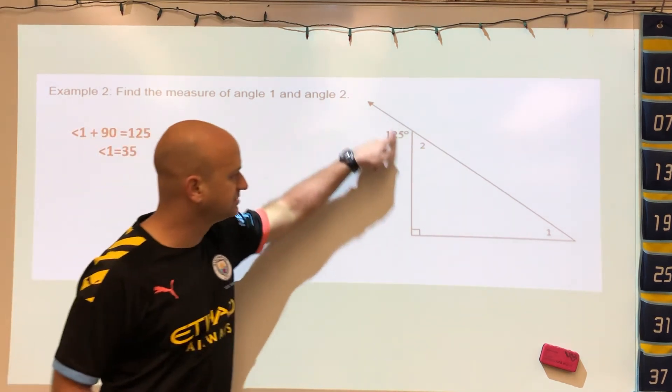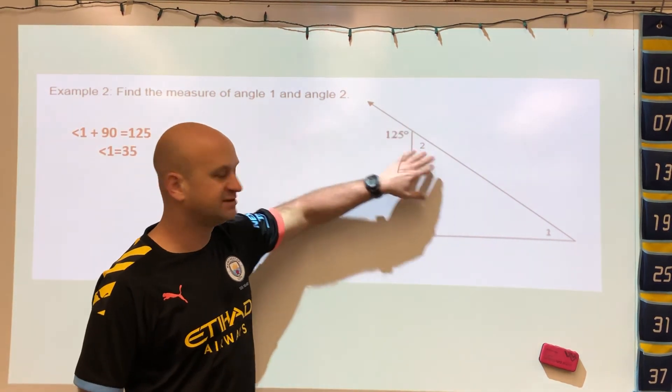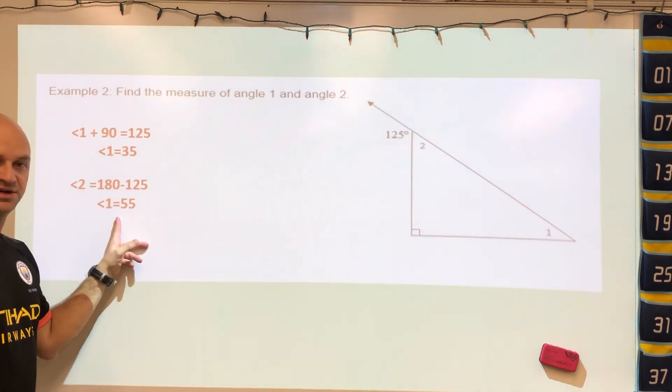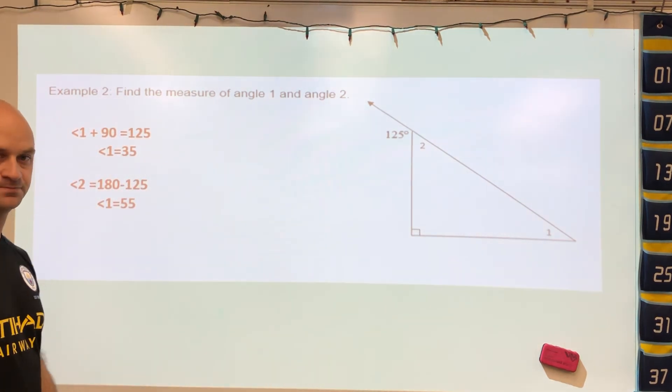Now to find angle 2, we can use linear pairs. If this is 125, this would be 180 minus 125, which is 55 degrees.